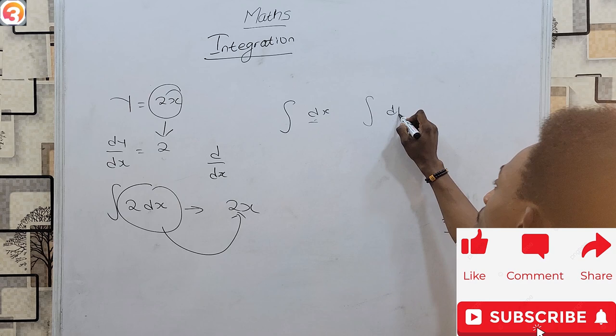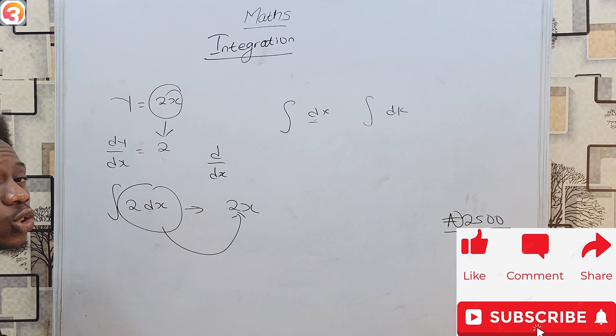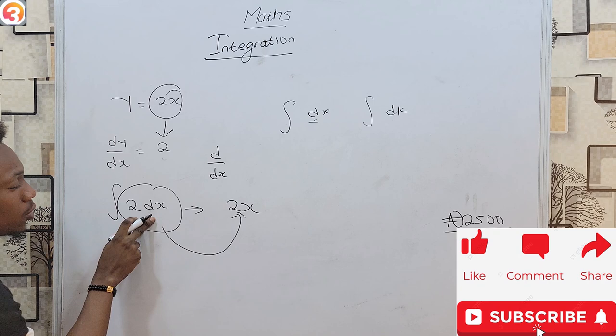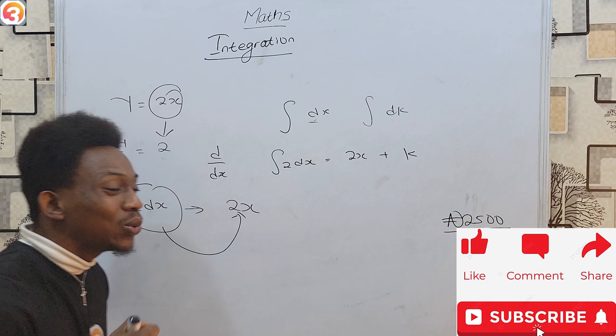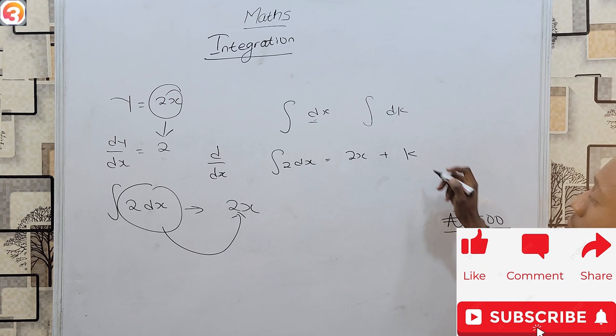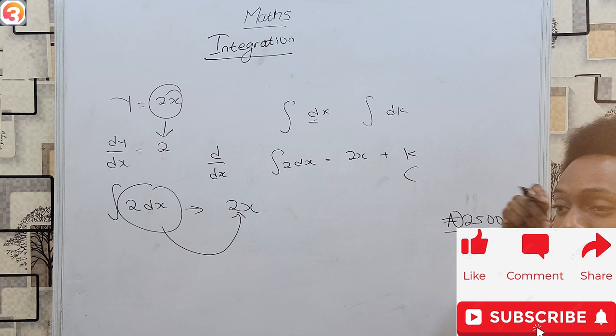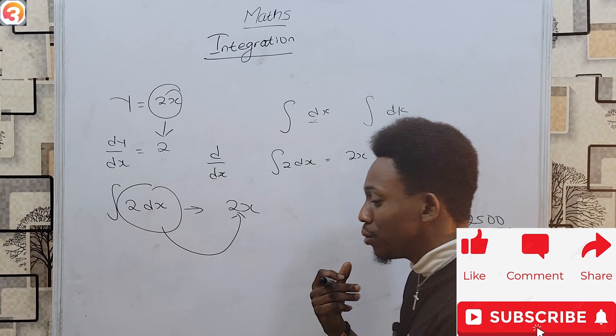One special thing about integration is that whenever you solve, there is always a letter that appears in your answer. For example, when you integrate 2 with respect to x, you don't just get 2x — you get 2x plus k. That k is a constant that comes out with every single integral as long as it is not definite. Some people use k, some use c — it doesn't much matter. This letter helps you balance your integration until you put in the definite numbers.